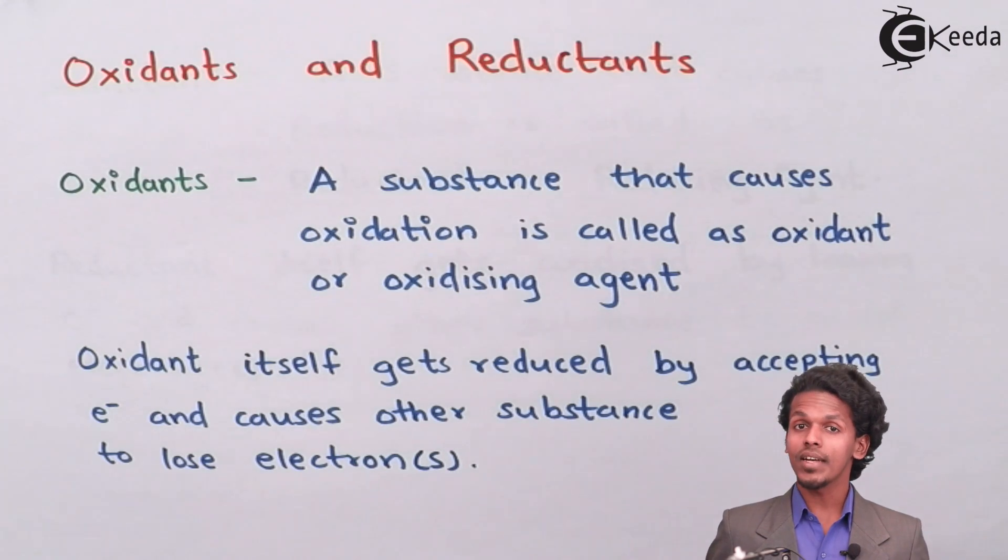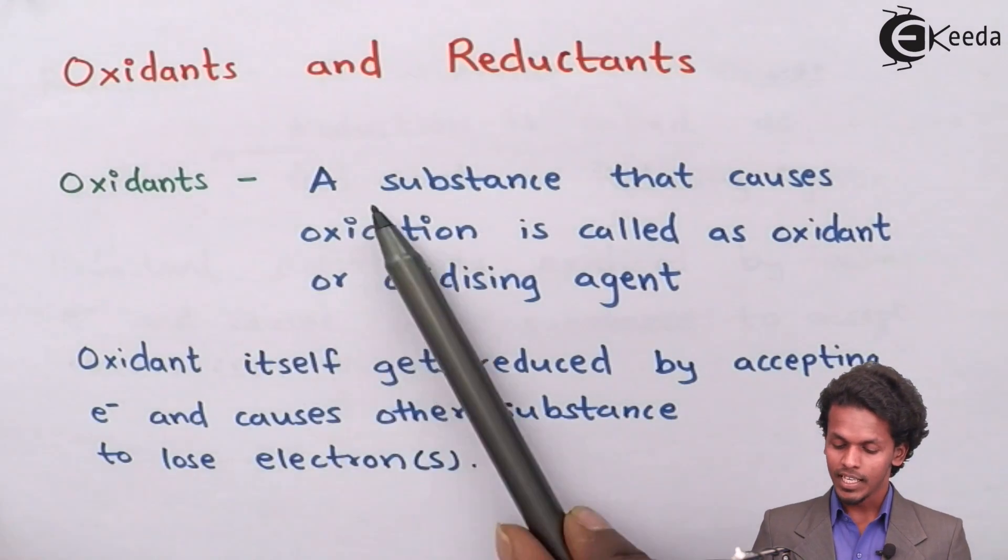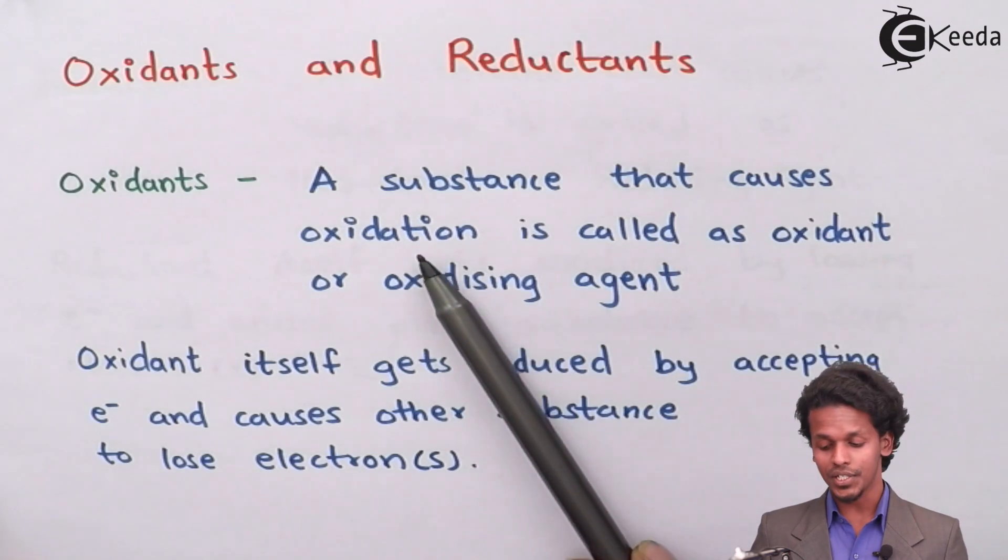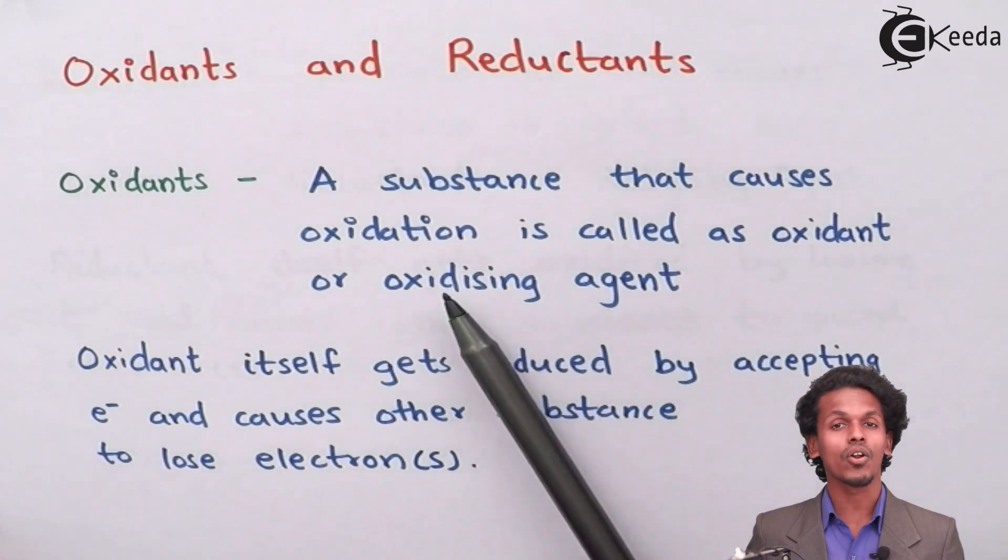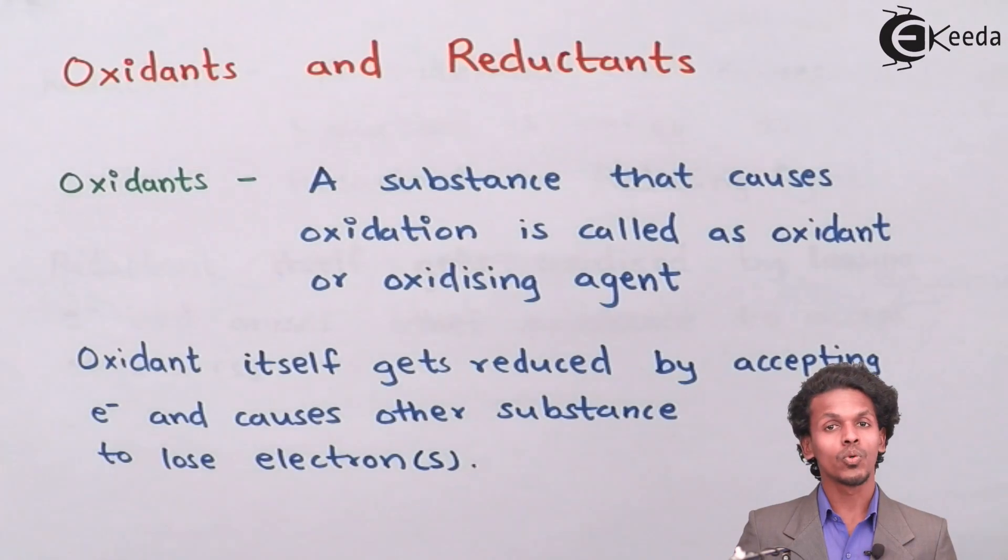Before understanding what is oxidant, we should know the definition of oxidants. A substance that causes oxidation is called as oxidant or oxidizing agent. Or a substance which helps to do oxidation is known as oxidant.